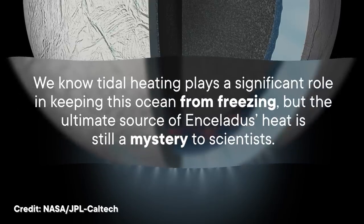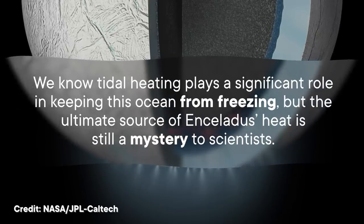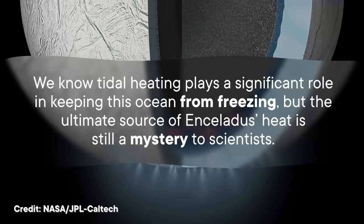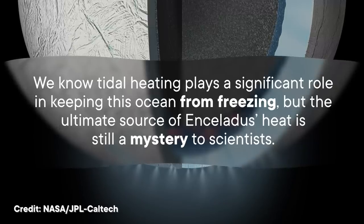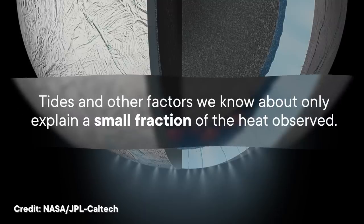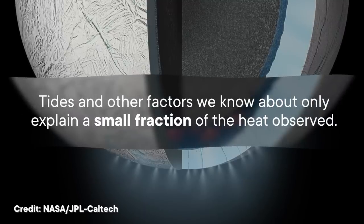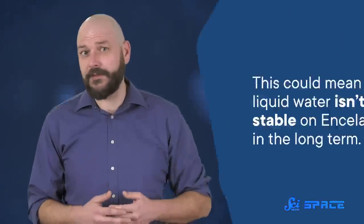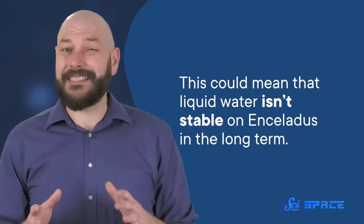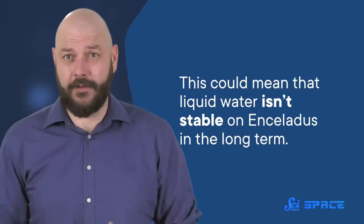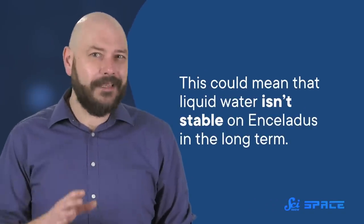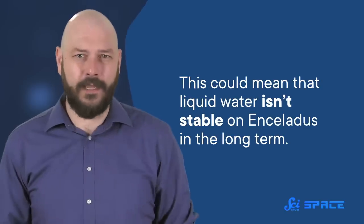We know tidal heating plays a significant role in keeping this ocean from freezing, but the ultimate source of Enceladus's heat is still a mystery to scientists. Tides and other factors we know about only explain a small fraction of the heat observed. One possibility is that the moon used to have a more eccentric orbit that provided more tidal heating. Maybe what we see today is a slowly cooling remnant of this. This could mean that liquid water isn't stable on Enceladus in the long term, which would be a point against the moon having enough time to evolve and support life.